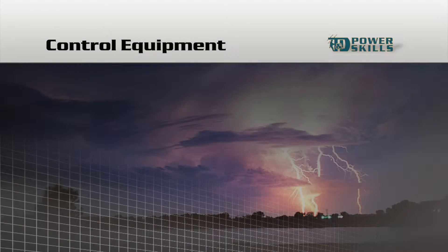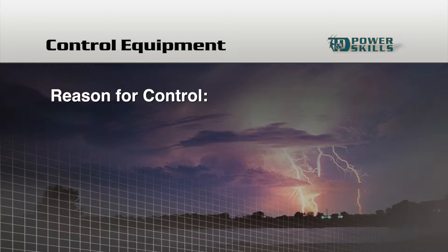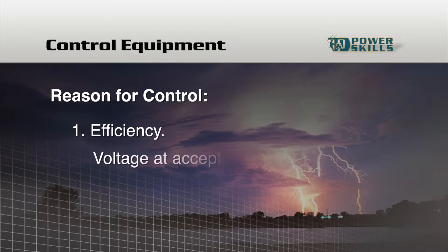There are two principal reasons why control is needed in substations. One reason is to maintain the efficiency of our electrical system. Our customers' equipment is designed to run at specific voltages, so we control voltage to provide our customers with power at acceptable voltage levels.